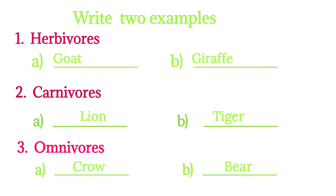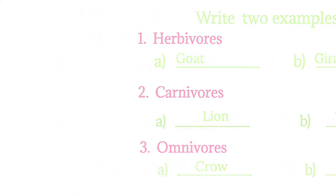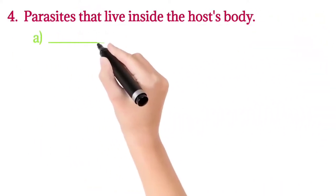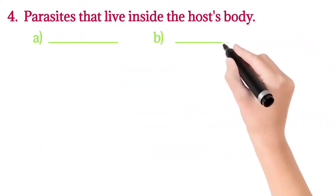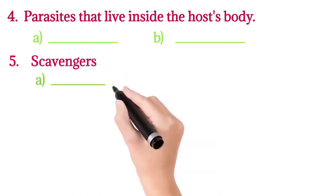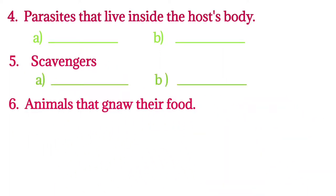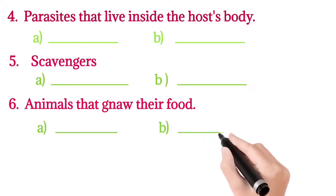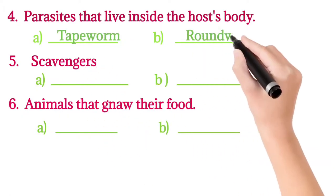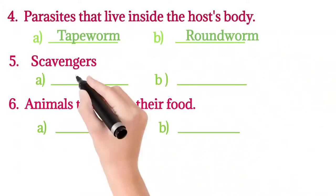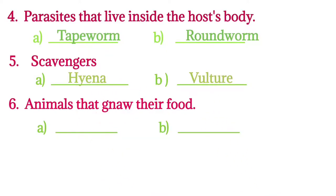Third, omnivores: crow, bear, chimpanzee, sparrow, etc. Parasites that live inside the host: tapeworm, hookworm, roundworm. Next, scavengers - we already discussed: hyena, vulture, hawk, etc.